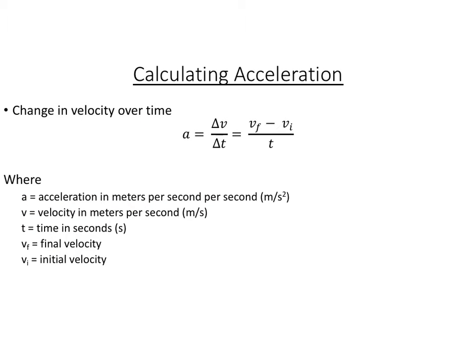The typical equation for acceleration should look sort of familiar to you. Acceleration is the change in velocity over the change in time. We've talked about this change. It basically just means final minus initial. So VF is V final. VI is V initial.